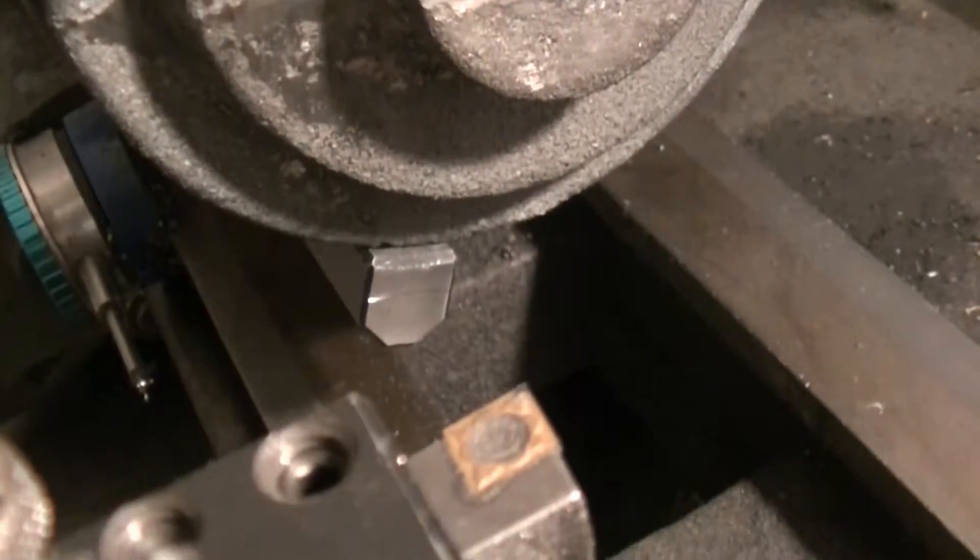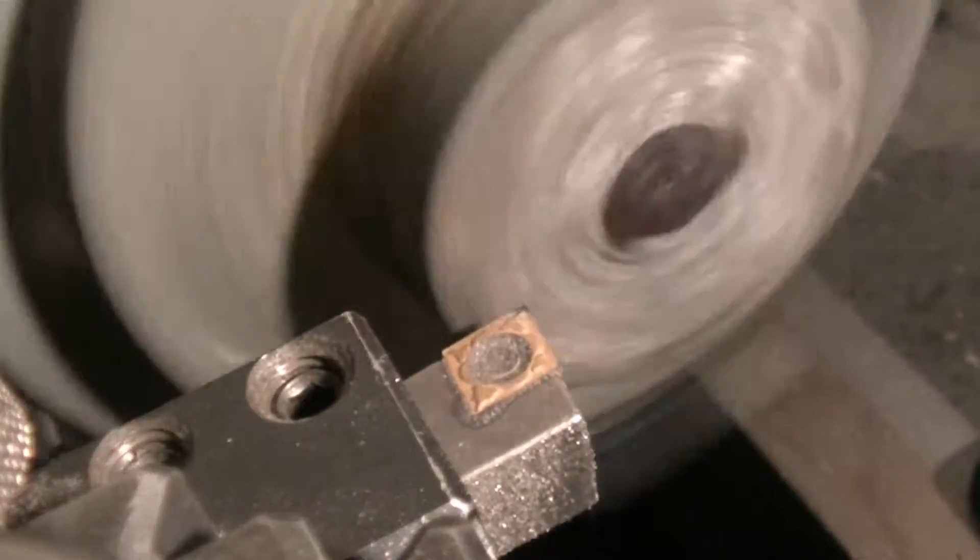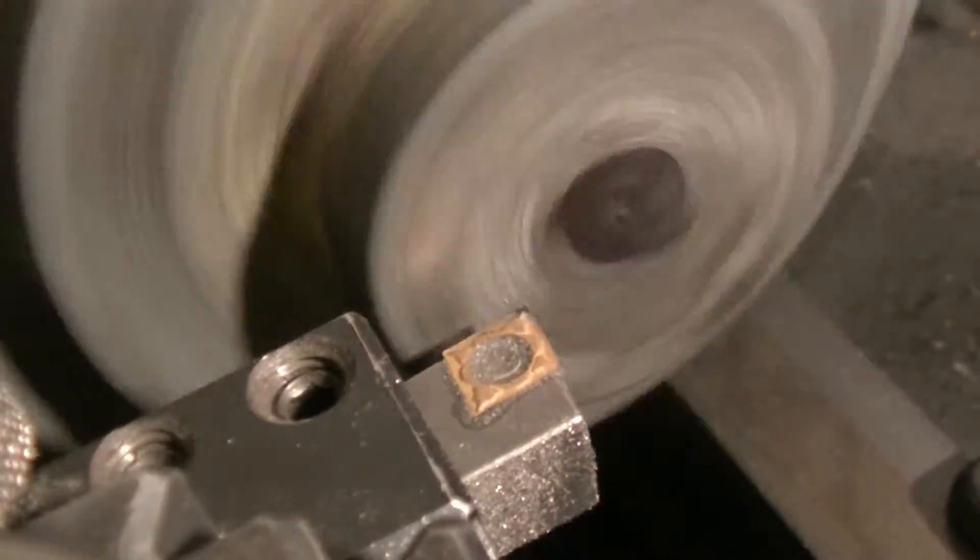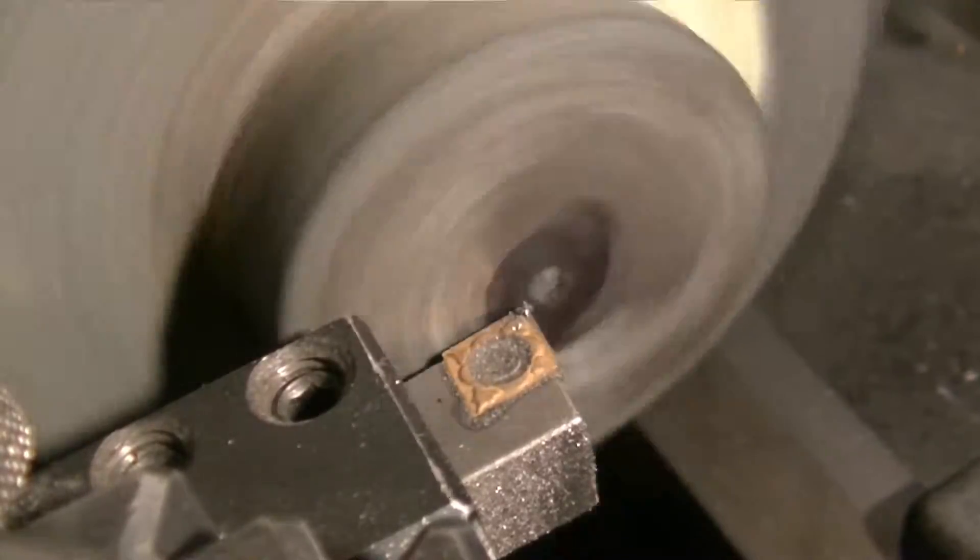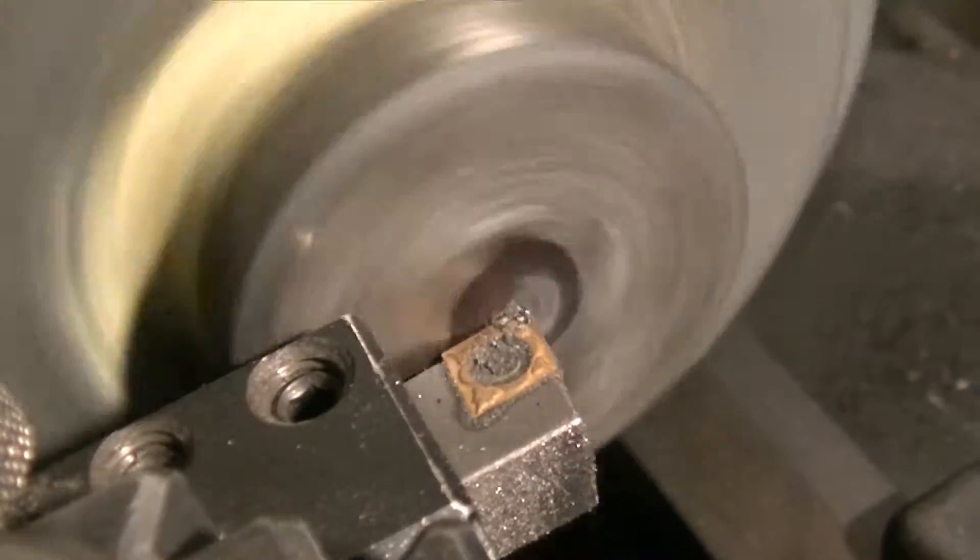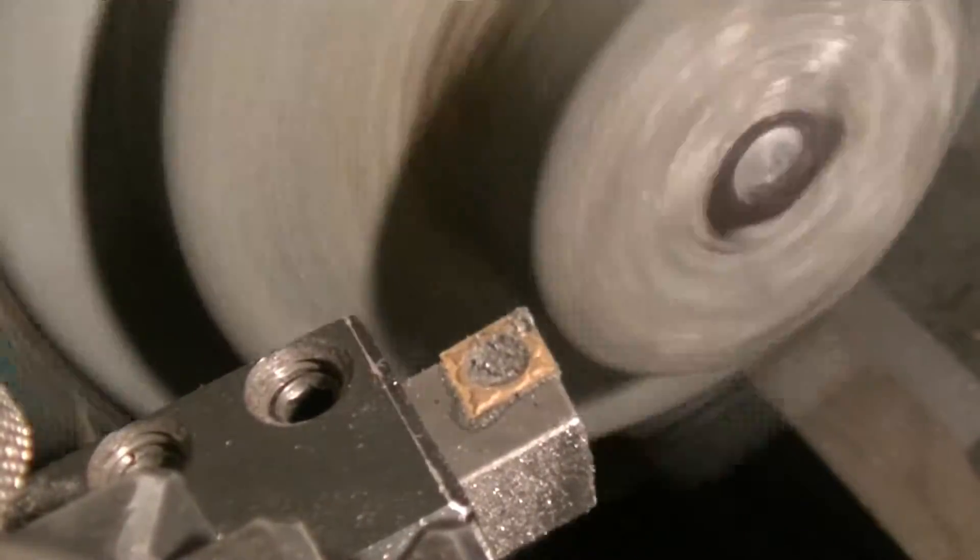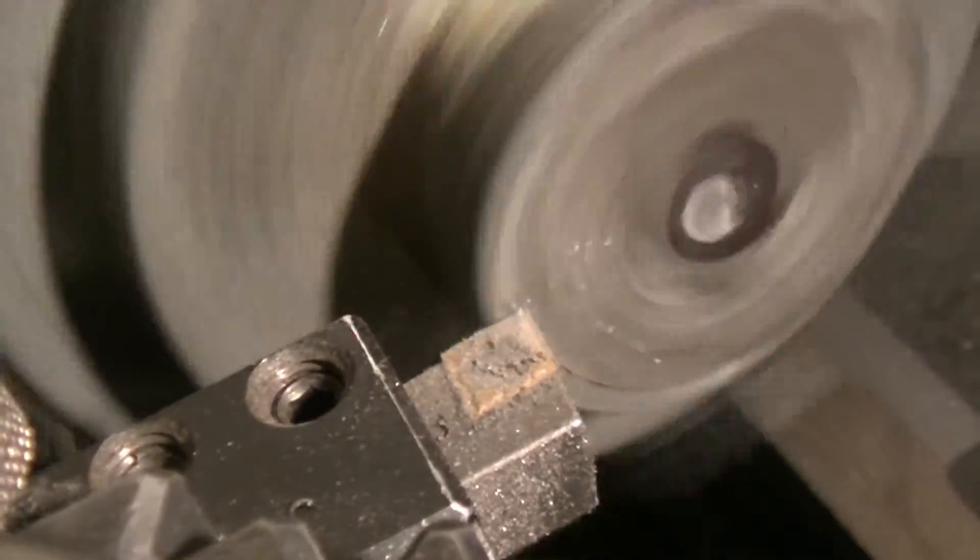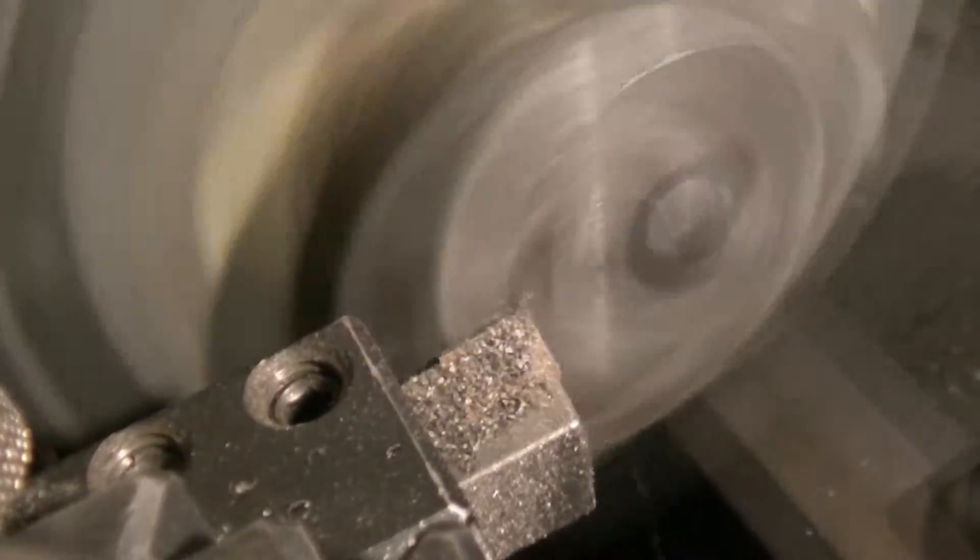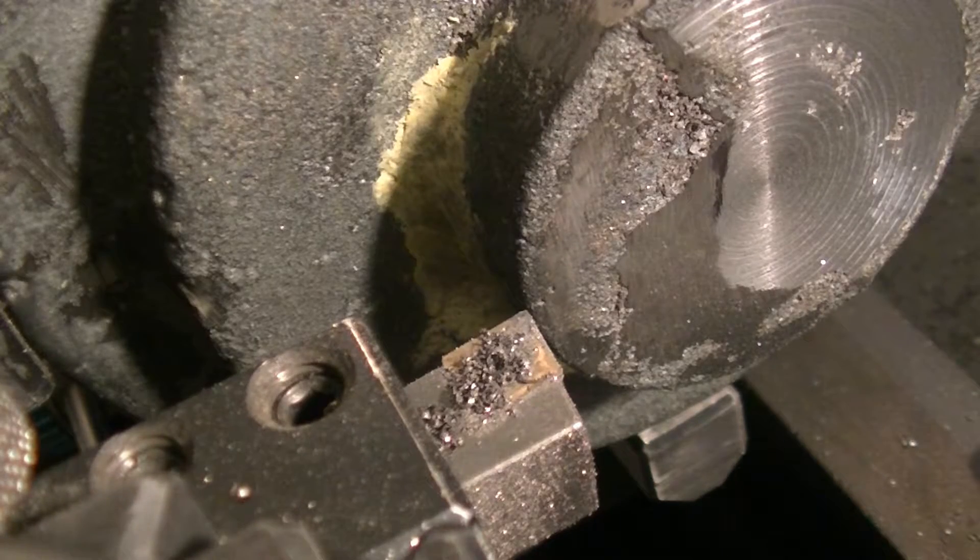So let's look at our cutter here. And we're going to start by facing this part off. So I'm going to see if my cutter is on center. Yeah, it looks like it. So we're going to lock the carriage and the compound. We're going to take a light cut because this is a rough casting. Just to see how we're doing here. Yeah, we're getting there. Keep facing.